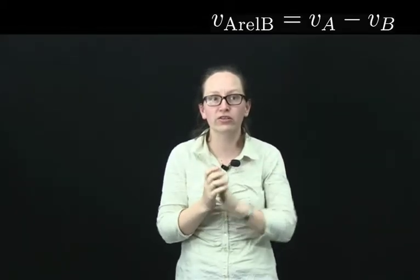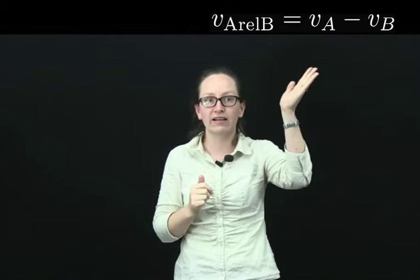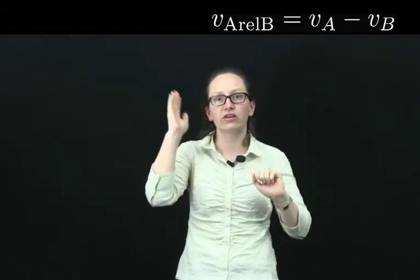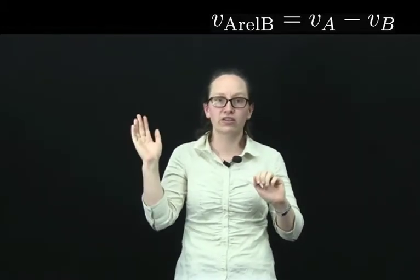So we've actually got an equation that we can use to describe this situation. The equation goes that the velocity of A relative to B is equal to the velocity of A minus the velocity of B.